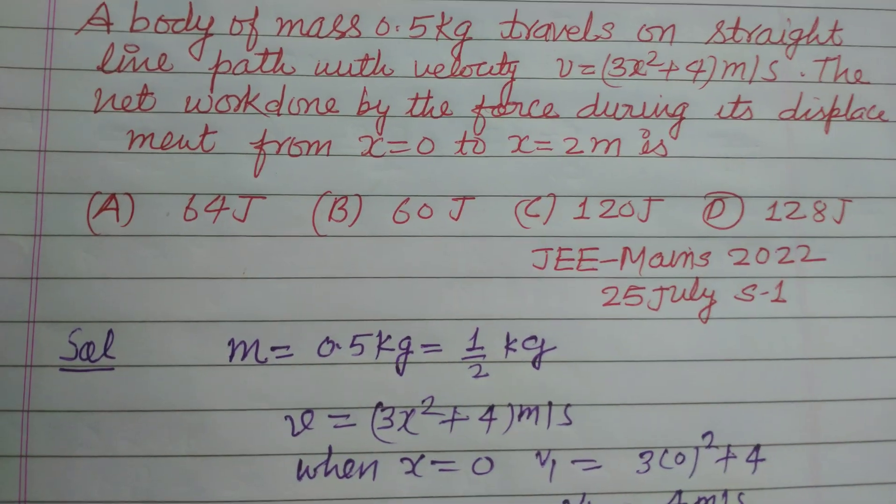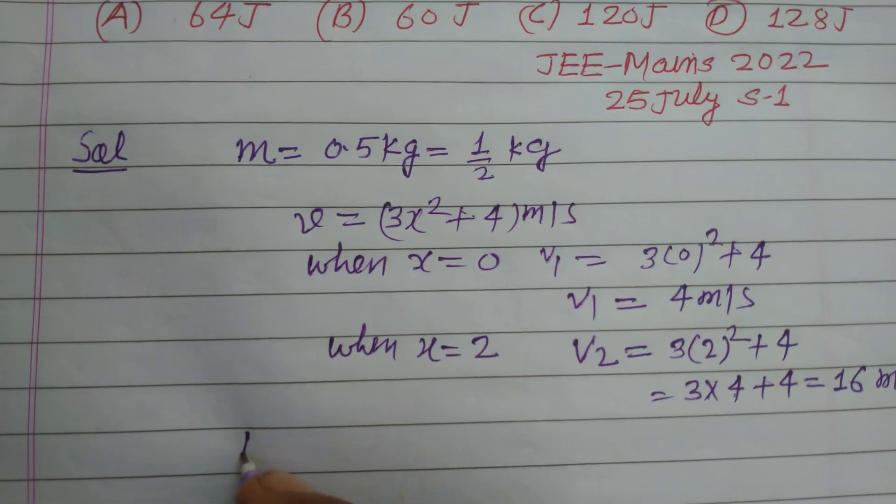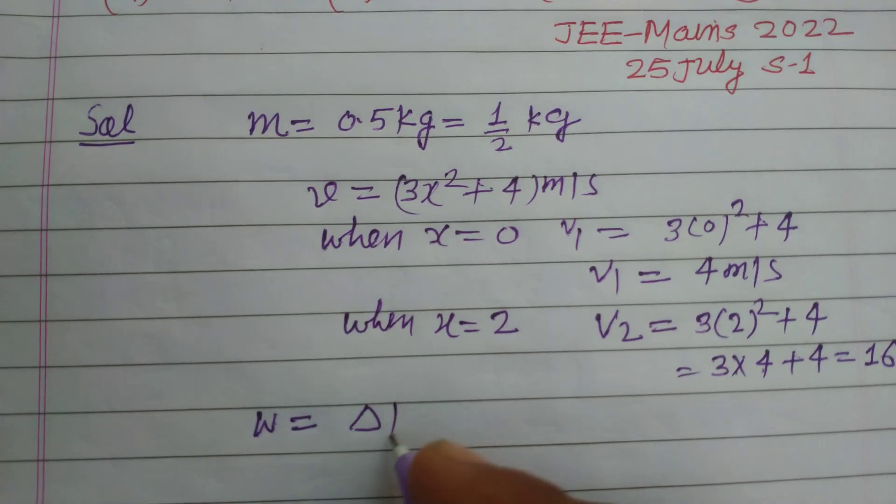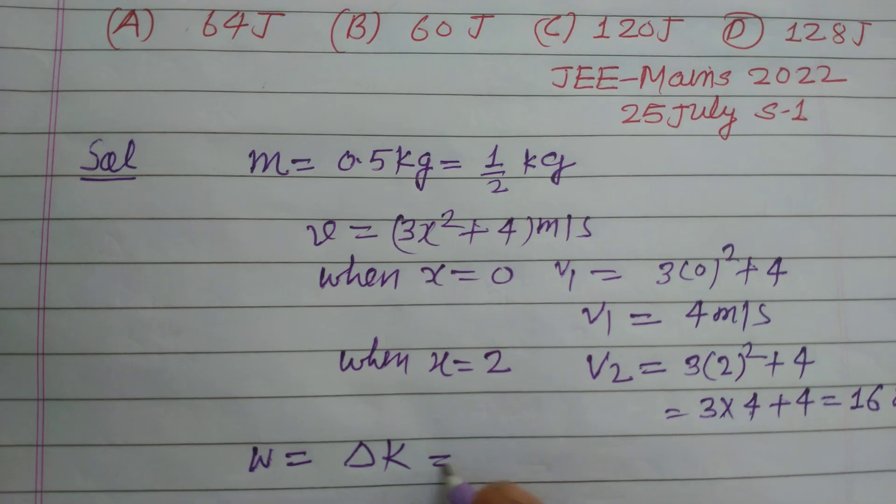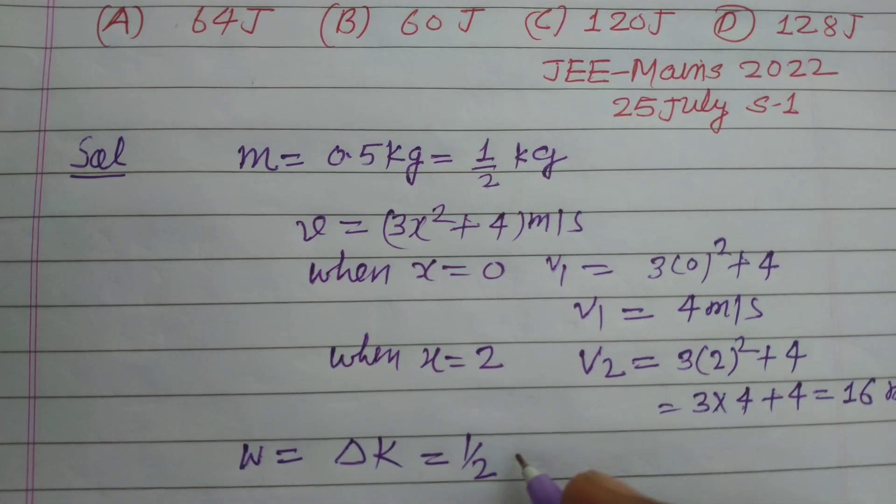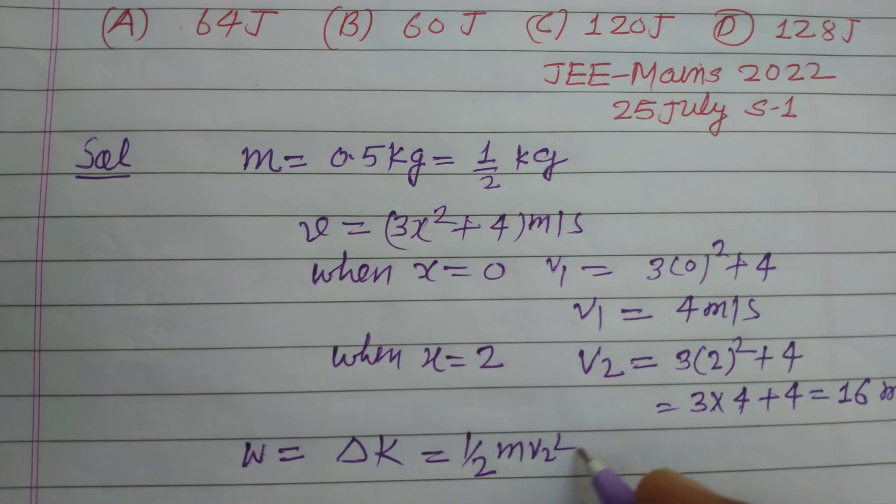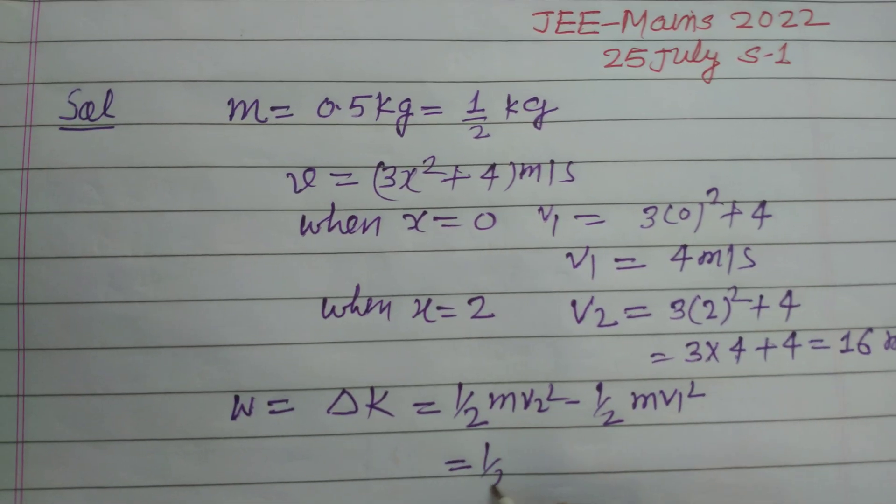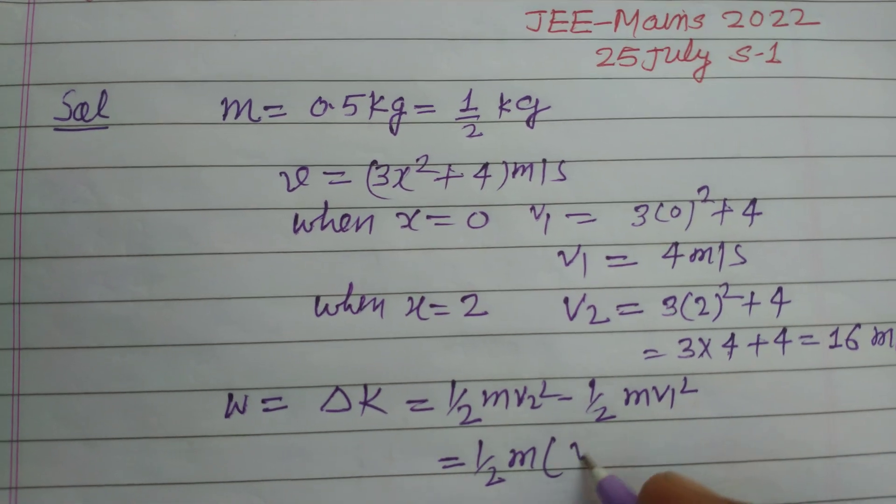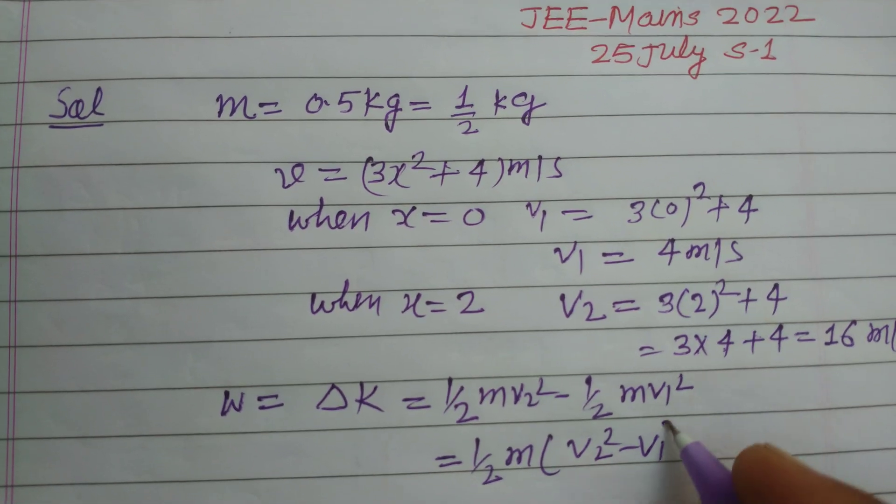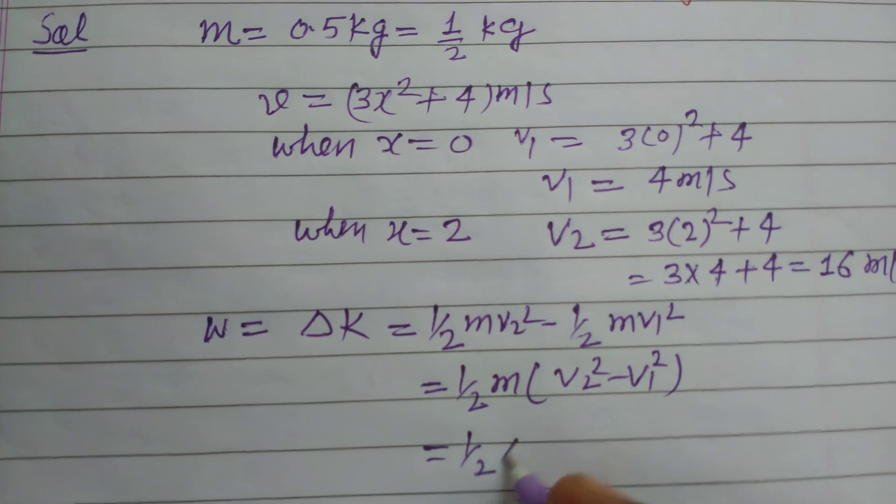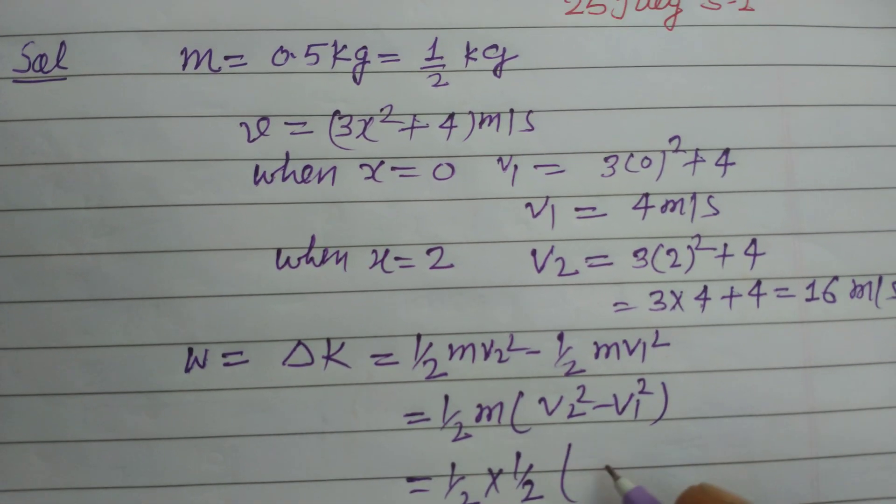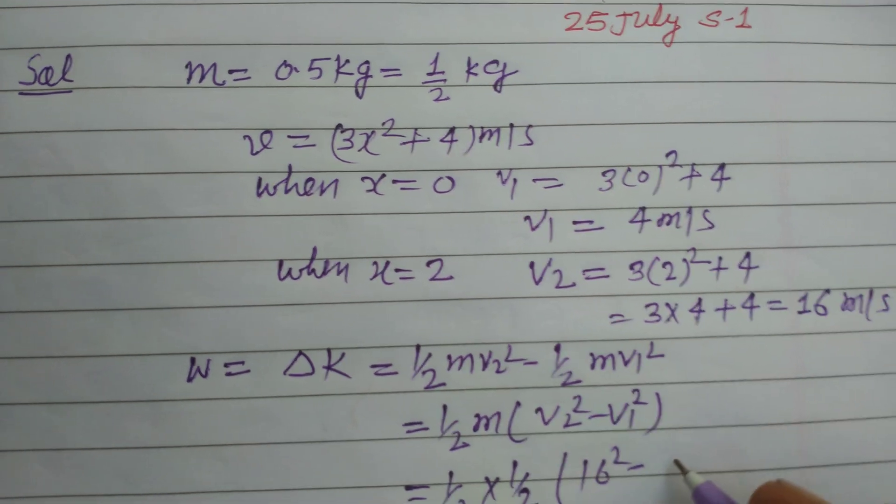And you know that work done by force equal to change in kinetic energy. So change in kinetic energy is half mv2 square minus half mv1 square. Half m is common, so v2 square minus v1 square. Half m, m is also half, so v2 square minus 4 square.